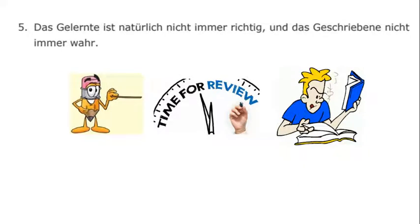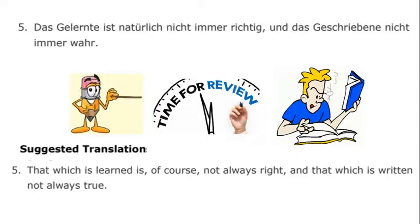The fifth sentence is: Das Gelernte ist natürlich nicht immer richtig und das Geschriebene nicht immer wahr. The suggested translation is: That which is learned is of course not always right, and that which is written is not always true.